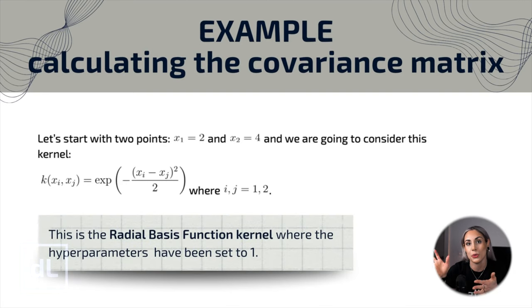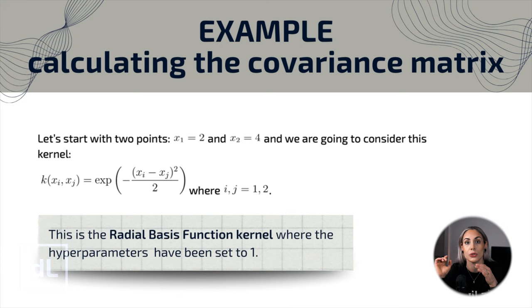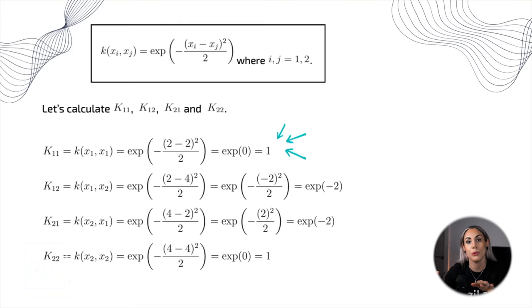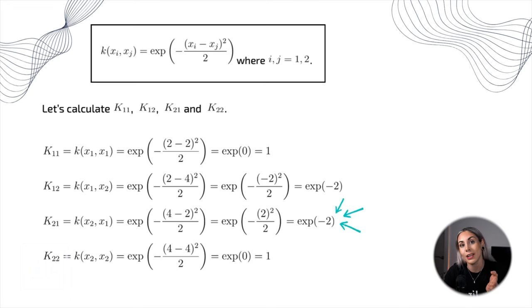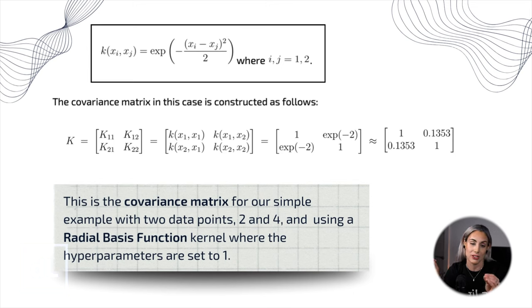Let's start with a simple example before the general definition. We start with two points — one at two and the other at four — and consider the radial basis function kernel with hyperparameters set to one. We calculate k(i,j) for i and j equal to one and two, giving four calculations: k(1,1), k(1,2), k(2,1), and k(2,2). We substitute the points into the formula and compute each component of the matrix. This gives us the covariance matrix for two data points using the RBF kernel.